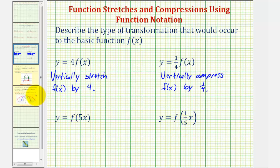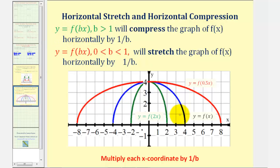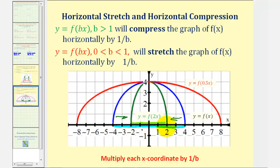Now for these next two examples, let's consider y equals f of bx. Again, notice first in blue we have the graph of the basic function y equals f of x. Now let's consider when b is greater than one — let's say b equals two. Notice the graph of y equals f of two x is actually horizontally compressed. Notice along the x-axis the parent function goes from negative four to positive four, but f of two x only goes from negative two to positive two, so it's actually half as wide as the parent function. Notice on the parent function this point and this point represent when f of four equals zero and f of negative four equals zero. But on f of two x, the input would be four and negative four when x is two and negative two, because the input is two times x.